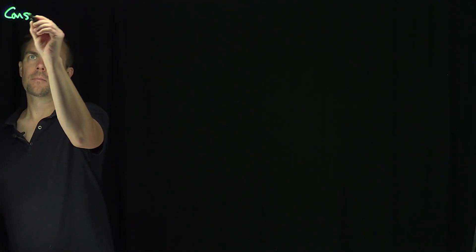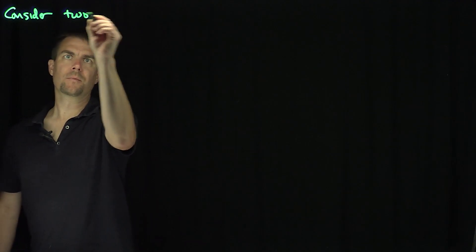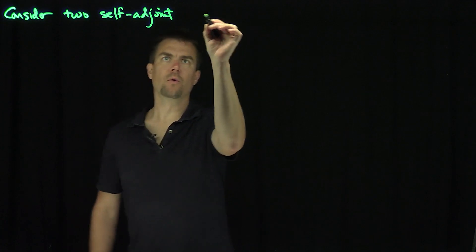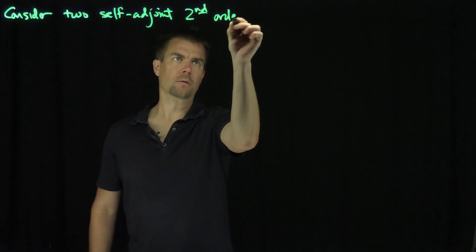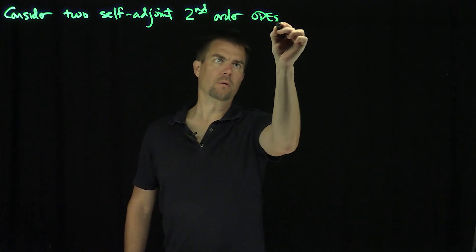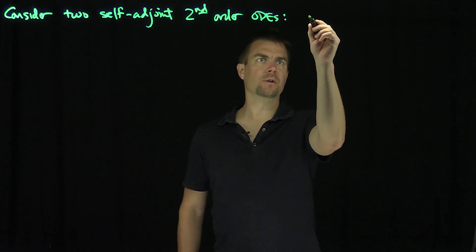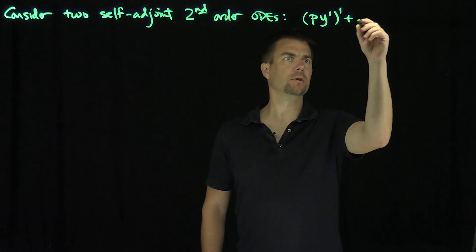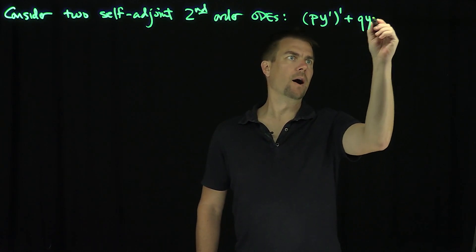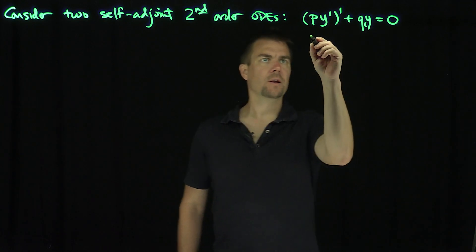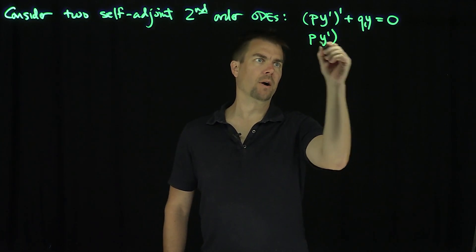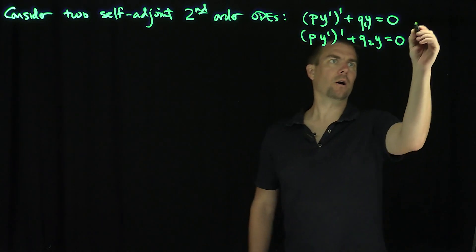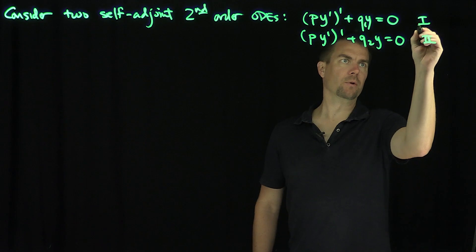Let's consider two self-adjoint second order ODEs. The first ODE is P y'' + Q1 y = 0, which I'll call equation 1. The second is P y'' + Q2 y = 0, which I'll call equation 2, with the same P in both.